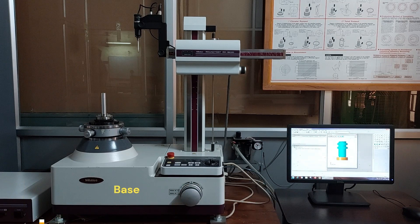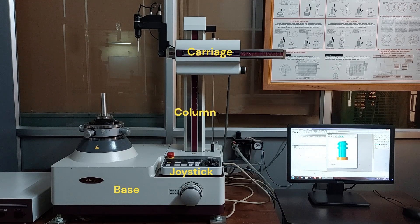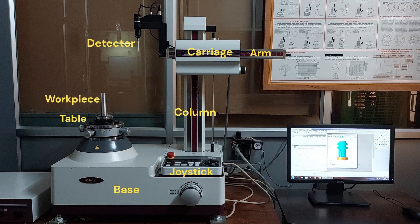The parts of the roundness tester are: Base, Joystick, Column, Carriage, Arm, Detector, Rotating Table, and Workpiece.